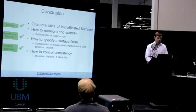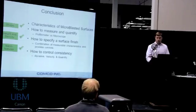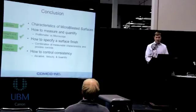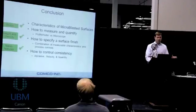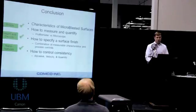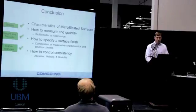In summary, we covered the main characteristics of microblasted surfaces: shape, height, density, and nano features. We looked at real-world ways to quantify these surfaces and how to specify them — on a print you'll typically see something like 'RA of 40 micro inches done with this abrasive at this pressure,' with process variables built into the specification. And lastly, how to control that in a manufacturing environment: make sure you have quality abrasive, consistent velocity, and a consistent quantity.